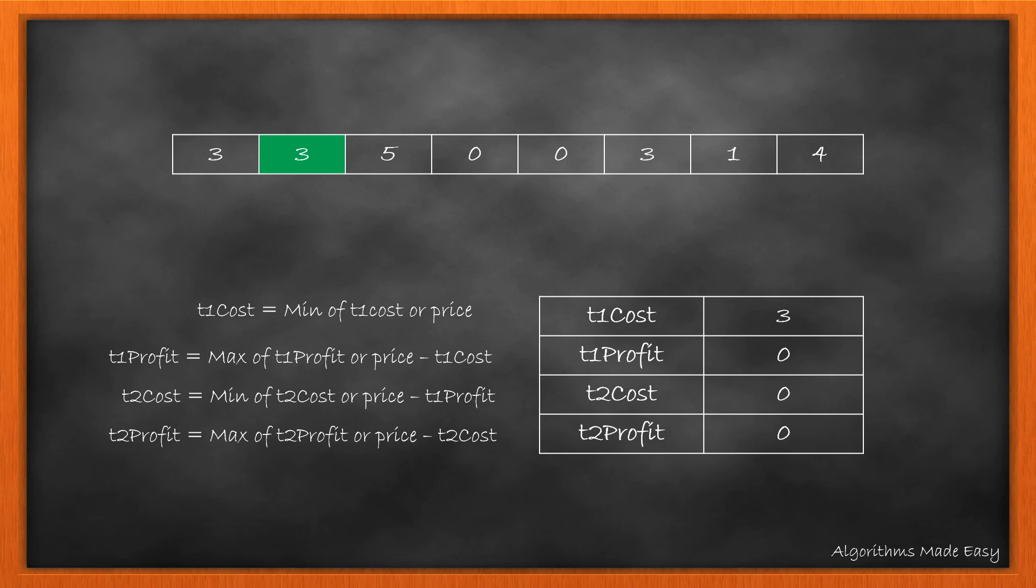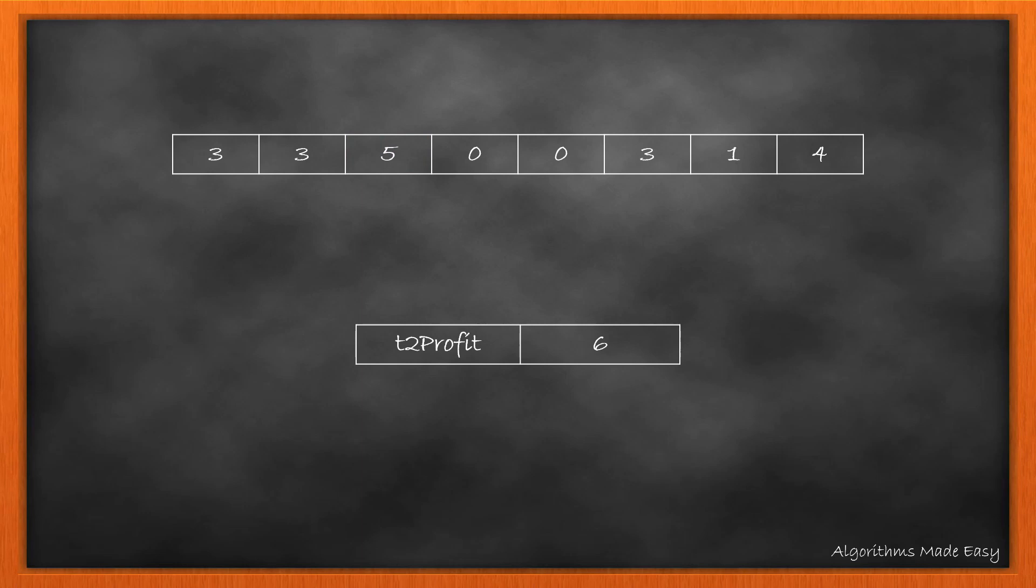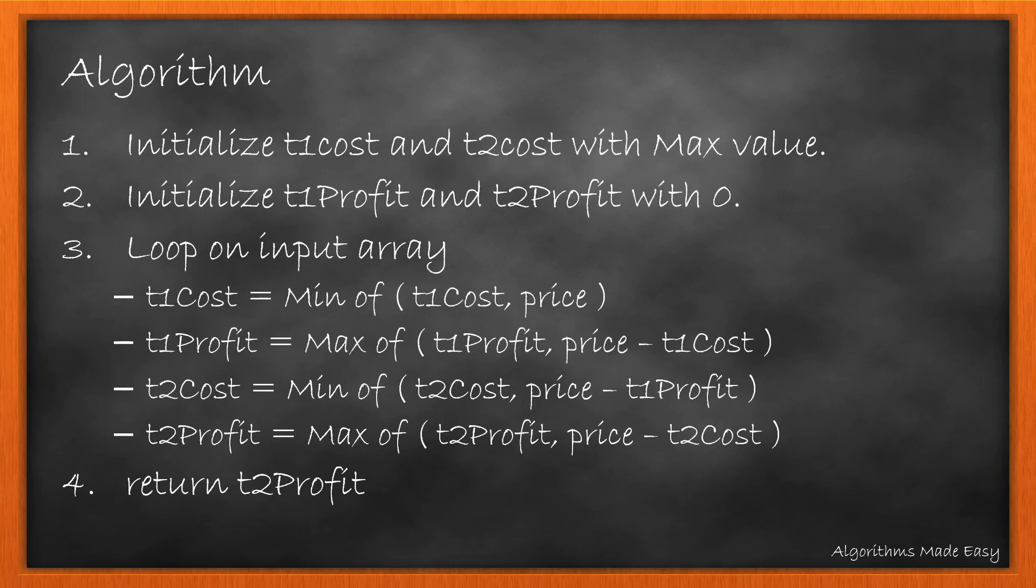We update the four values at each price and continue to do so till the end of the array. At the end we return T2 profit. The algorithm consists of four update logic that we discussed earlier.